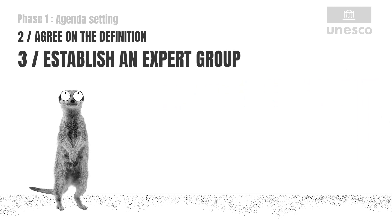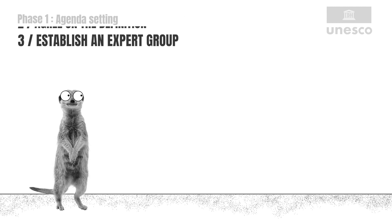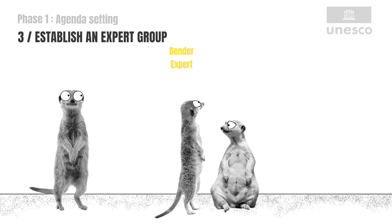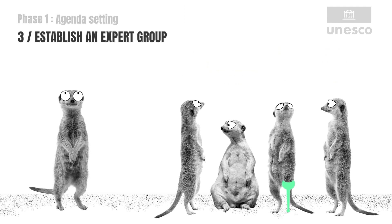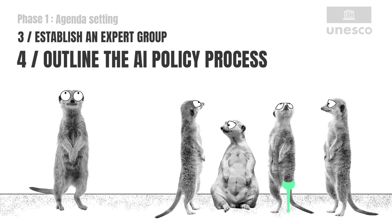Building block 3: Establish an expert group to determine the national AI landscape. This multi-stakeholder group of independent experts should be representative and inclusive. Building block 4: Outline the different stages in the multi-stakeholder AI policy process.